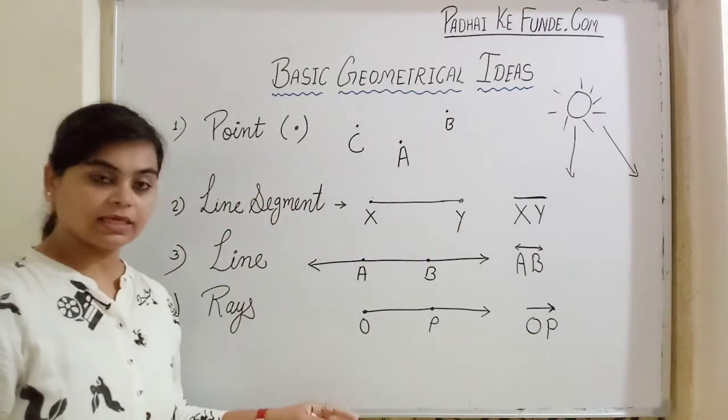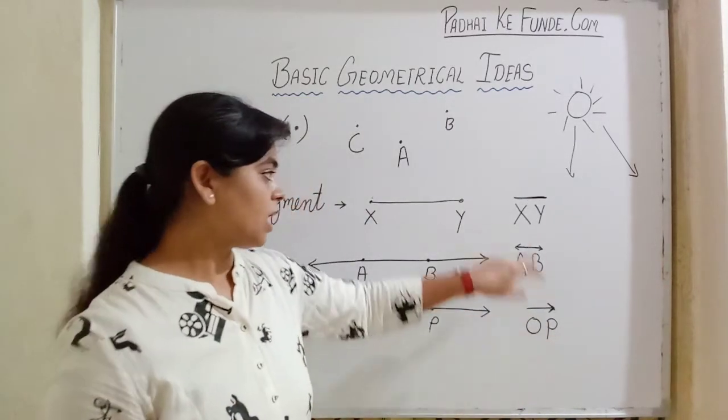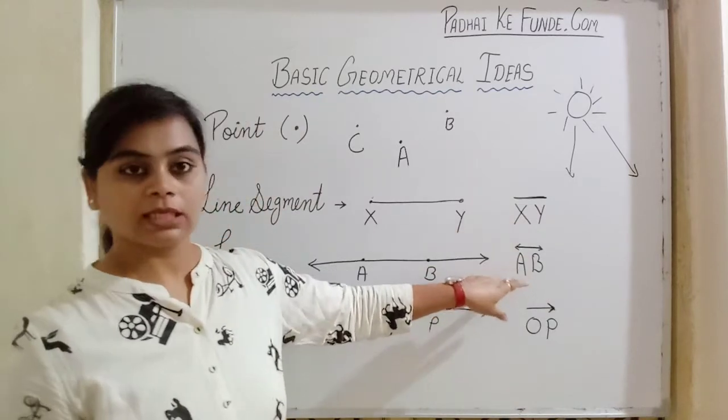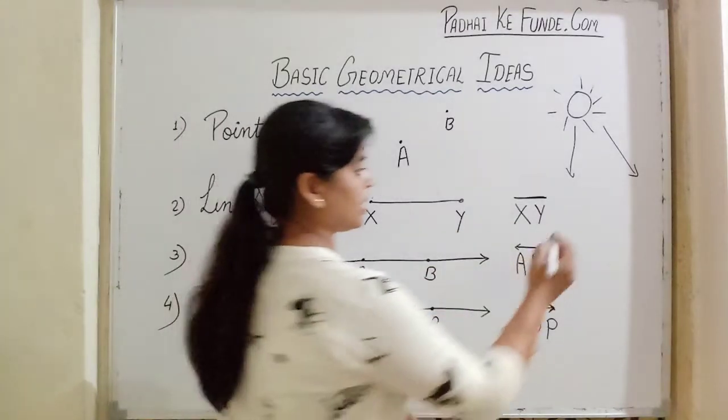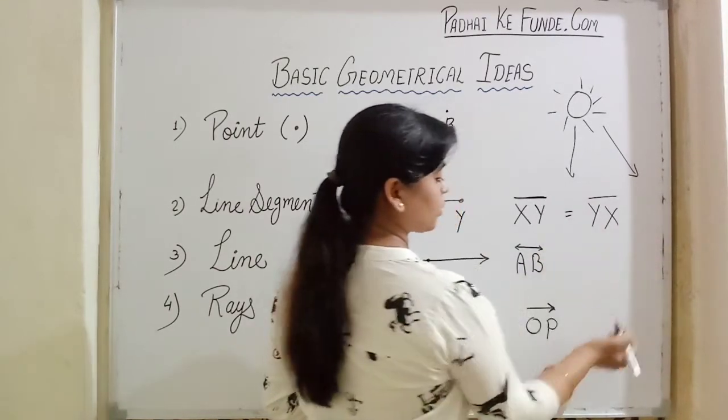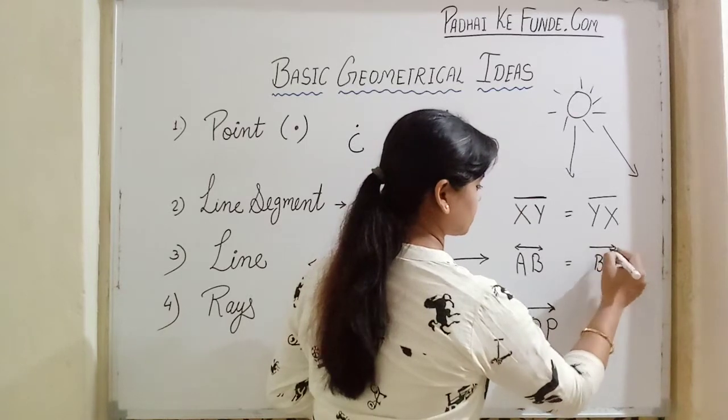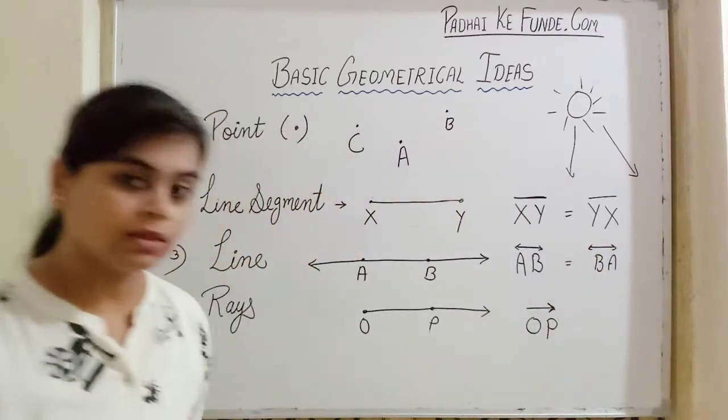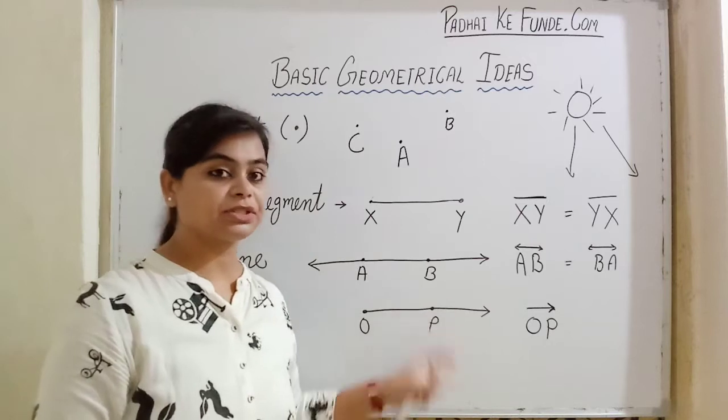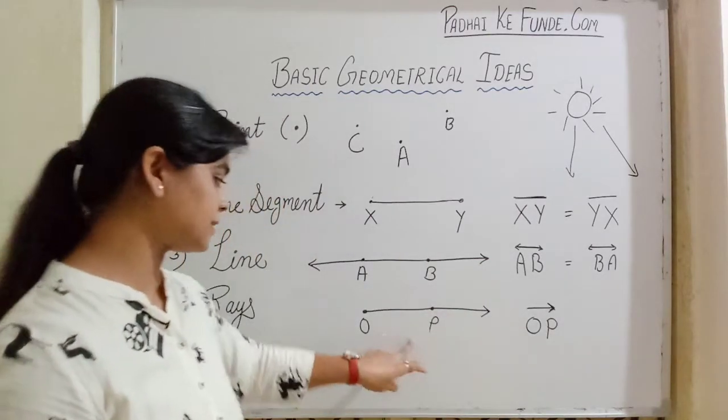One more thing - you see how to write the name. In line segment, in lines, it's okay, you can write the name anyhow. I can write it line YX also, line segment YX. I can call it line BA also. But a ray has a particular direction, so we cannot interchange its alphabet place.